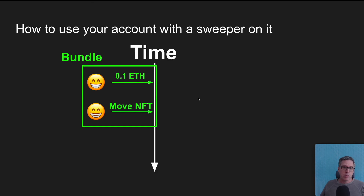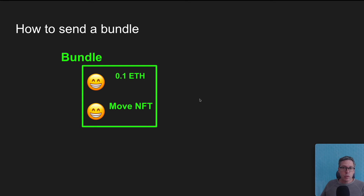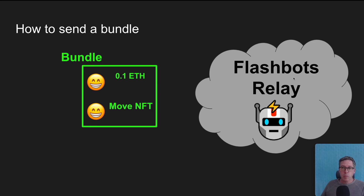We can't get the sweeper off our account. After this bundle lands, we're likely to leave a little bit of gas behind that will be swept as normal — but the move of the NFT or whatever action we wanted will have already occurred without the sweeper interfering. In order to send a bundle, you can't just use regular MetaMask or a standard JSON RPC like Infura. You need to use a special relay — in this case, the Flashbots relay — which is a publicly available API that allows for special inclusion rules when getting transactions onto the Ethereum blockchain.